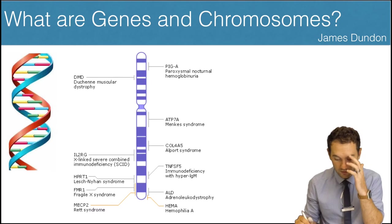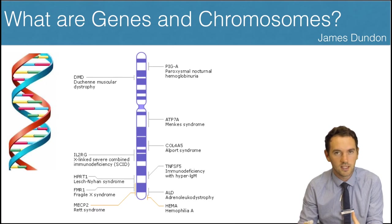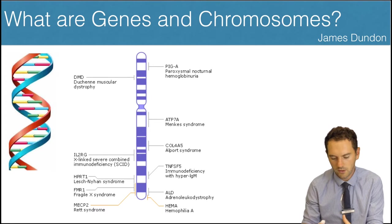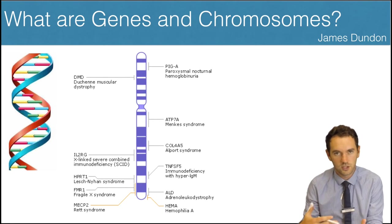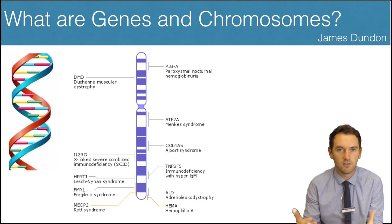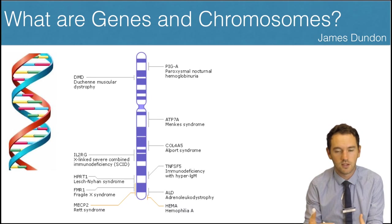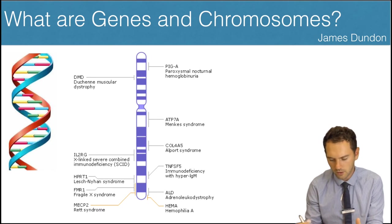Now, in humans, all of those genes are basically identical. So we've got 23 chromosomes. On chromosome 1 we're going to have a set of genes, on chromosome 2 we're going to have a set of genes, on chromosome 3 we're going to have a set — and that's going to be the same for every single human being. They're going to have those same genes in those same locations on those same chromosomes.